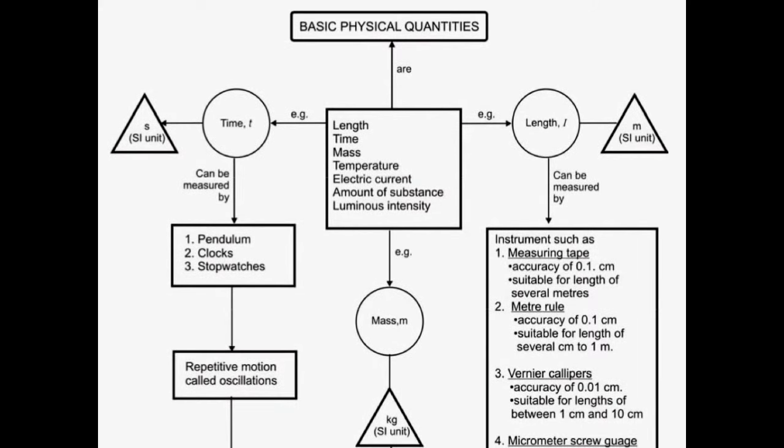Basic physical quantities are: Length, Time, Mass, Temperature, Electric Current, Amount of Substance, and Luminous Intensity.